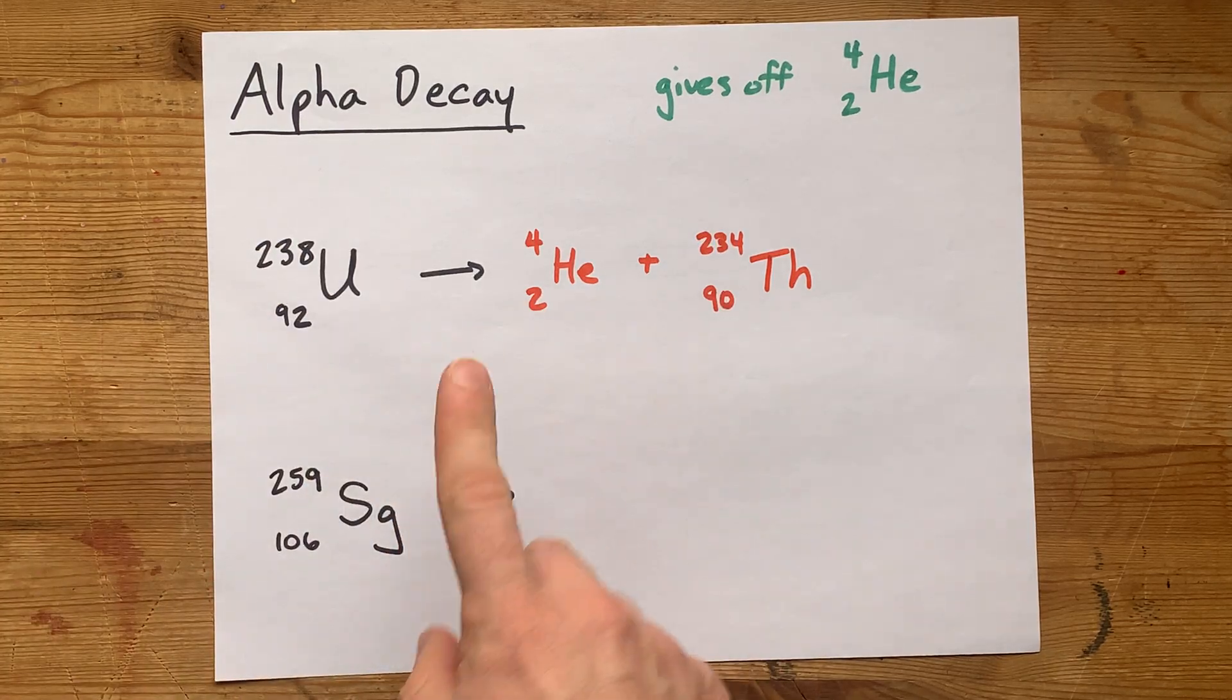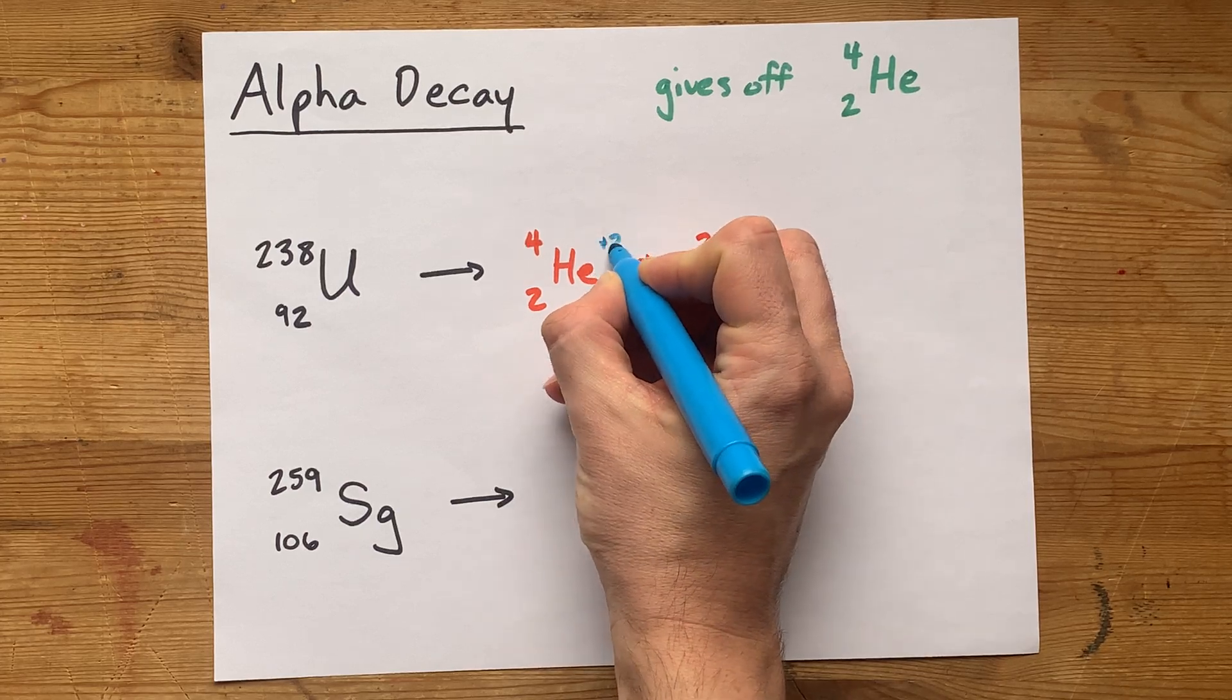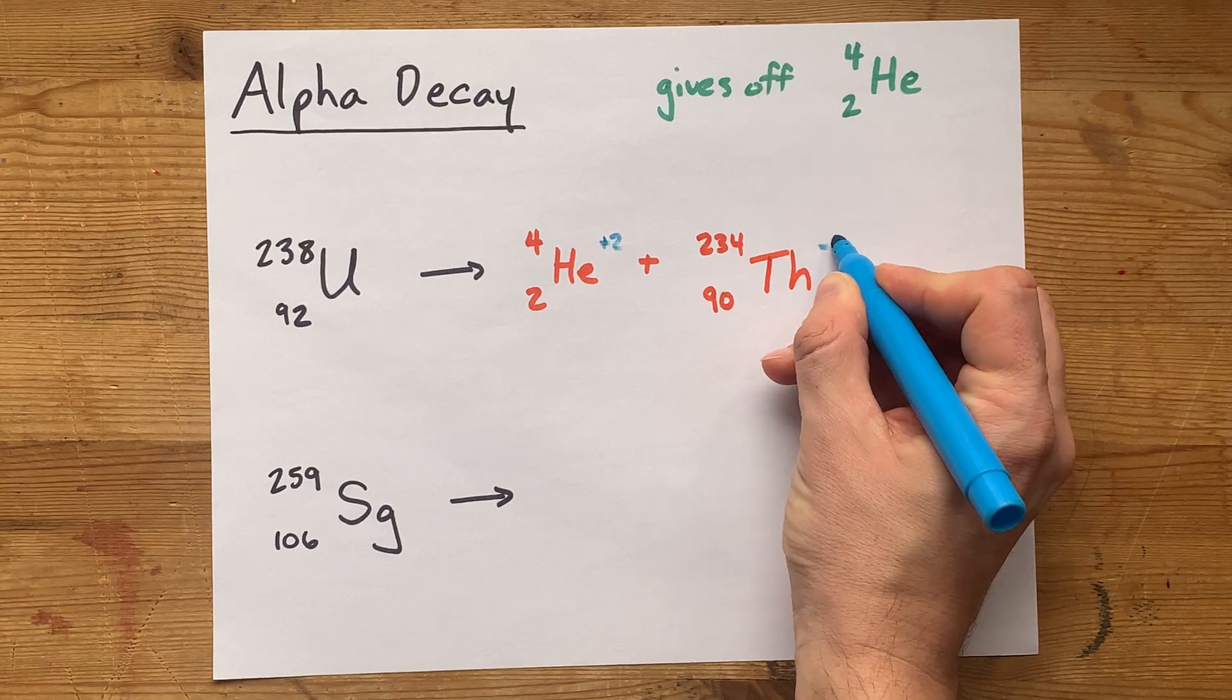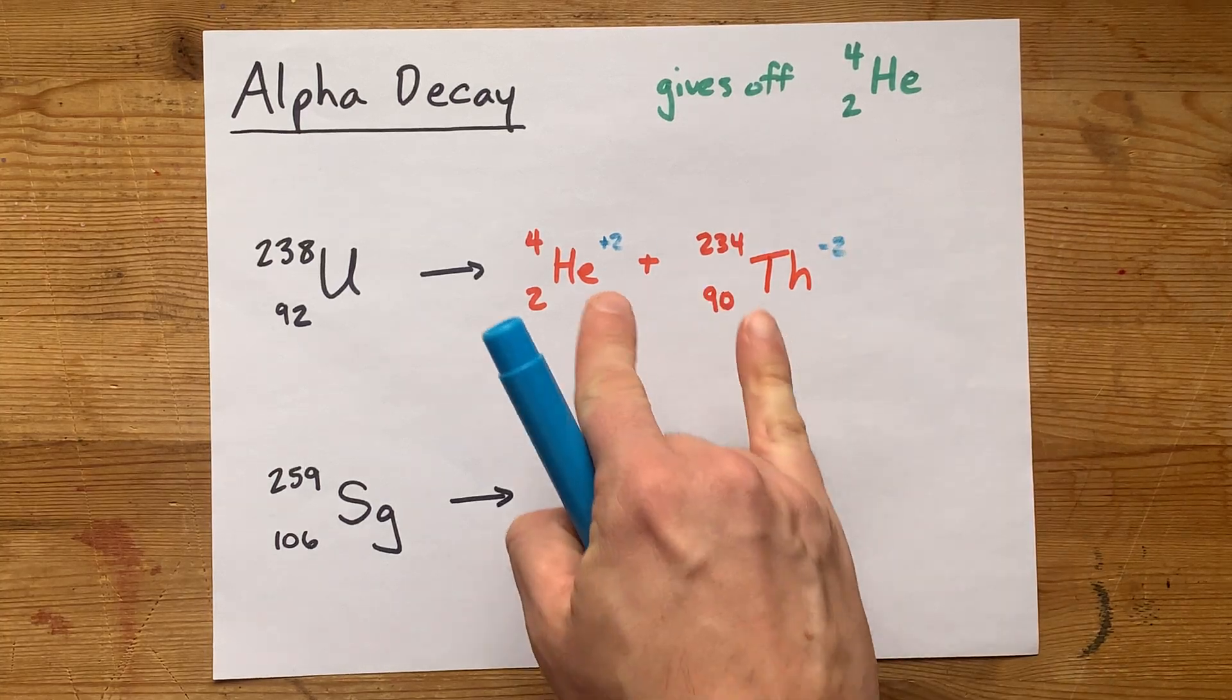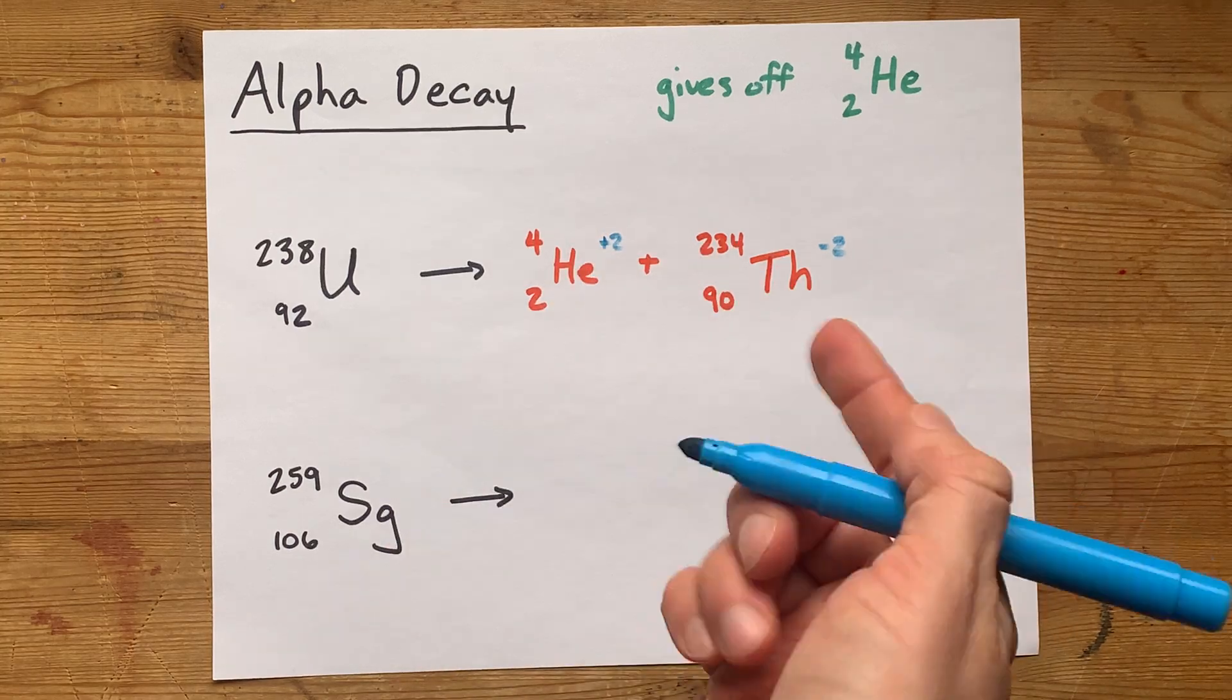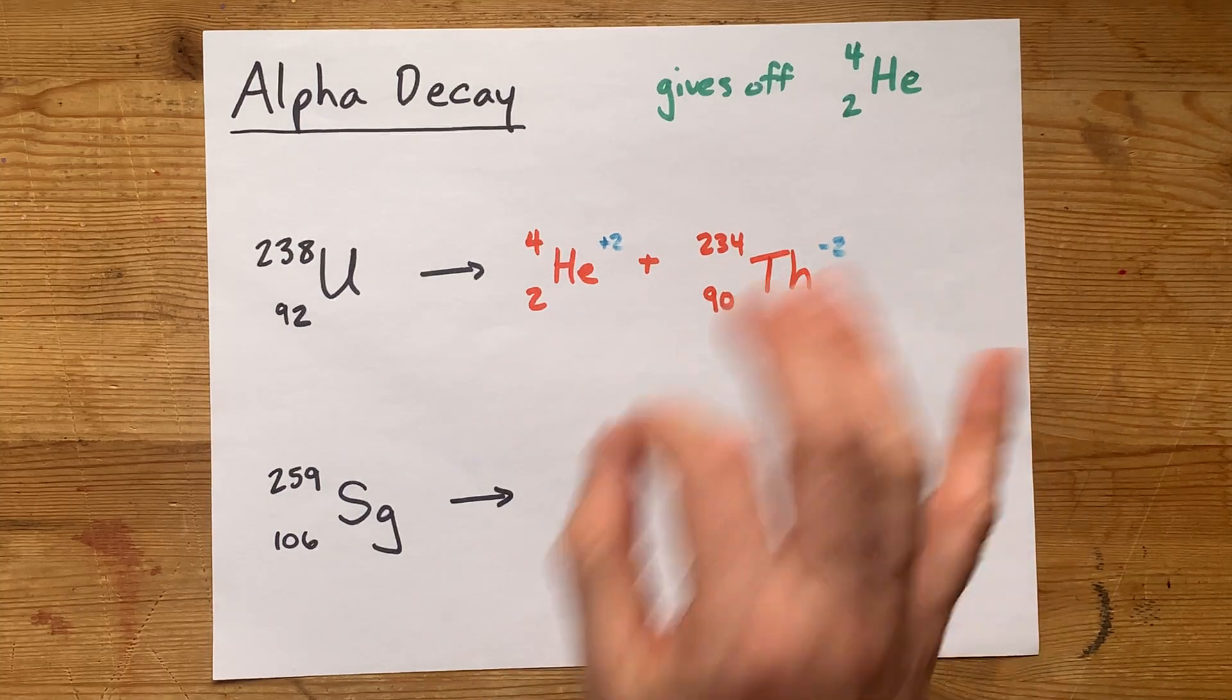Now, some teachers are going to want you to say that this helium had a plus 2 charge, and therefore this thorium has a minus 2 charge. I personally don't write those, because accounting for the electrons is not really something I care about when I'm doing nuclear decompositions.